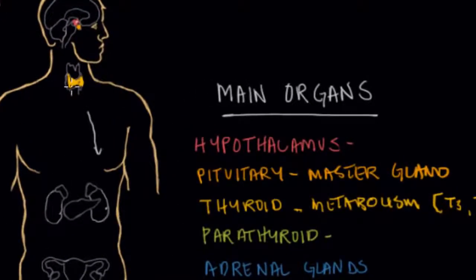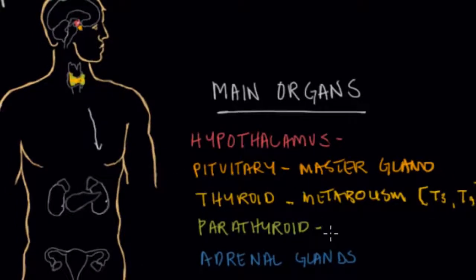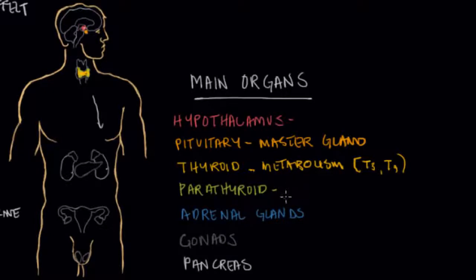Behind the thyroid gland are four spots collectively known as the parathyroid gland — located on the back of the thyroid gland. The parathyroid gland is chiefly involved in regulating the body's calcium levels, and it does that through its hormone, parathyroid hormone.